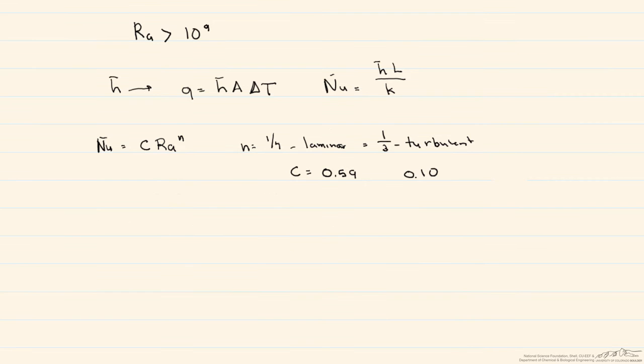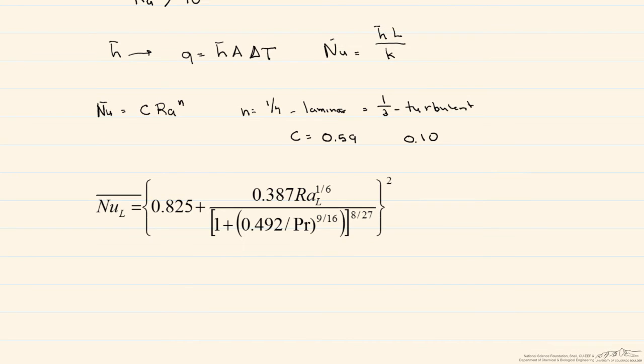A more suitable correlation that can be used for both turbulent and laminar flow for a vertical plate is as follows. And what makes this particular correlation useful is that it can be used over the entire range of the Rayleigh number.